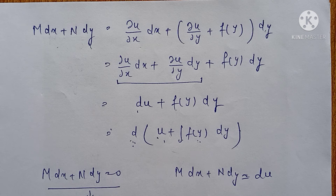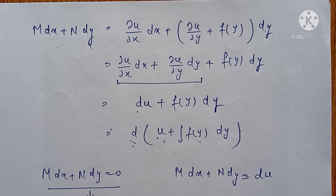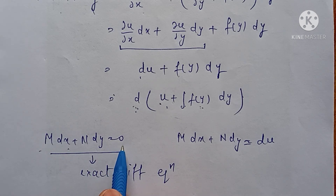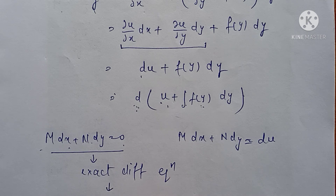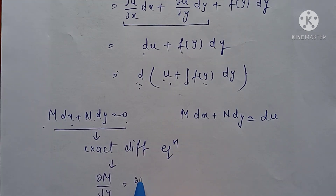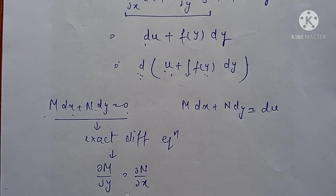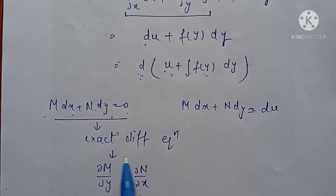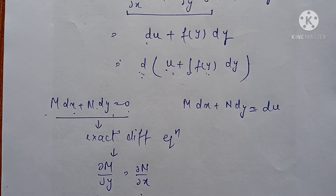So the condition for the differential equation to be exact must be remembered, because numerical problems based on this will be done in the next lecture — finding solutions of exact differential equations. It is very important to remember this necessary and sufficient condition: any equation of the type M dx + N dy = 0 is exact when ∂M/∂y = ∂N/∂x. This is the necessary and sufficient condition. See you in the next video with the solution of exact differential equations. If you have any problem or anything is not understood in this topic, you can let me know in the comment box.